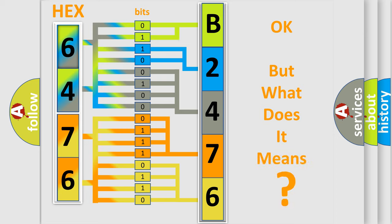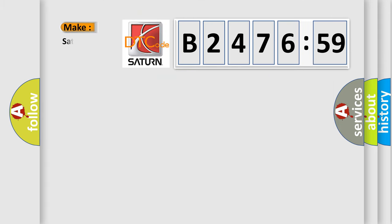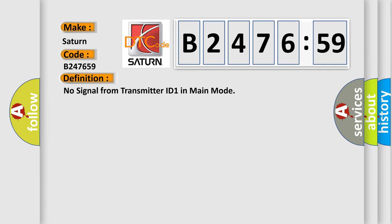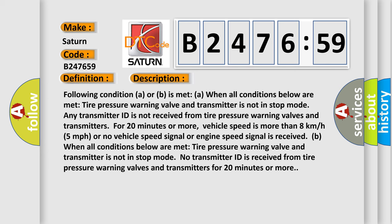We now know in what way the diagnostic tool translates the received information into a more comprehensible format. The number itself does not make sense to us if we cannot assign information about it to what it actually expresses. So, what does the diagnostic trouble code B247659 interpret specifically for Saturn car manufacturers? The basic definition is no signal from transmitter ID 1 in main mode.